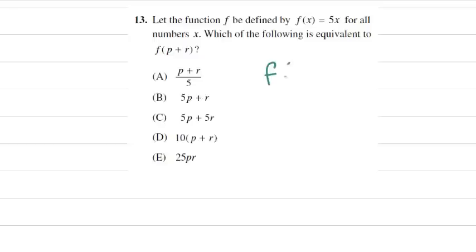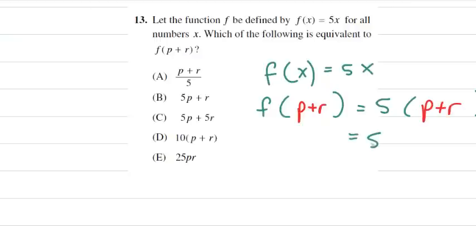First, we write out our function f(x) equals 5x. And f(p plus r) is going to be 5 times (p plus r). So wherever I see an x, I put a p plus r. Now we're just going to simplify that. I'm going to distribute the 5 to the p and the r: 5p plus 5r. And that is the same as choice C.